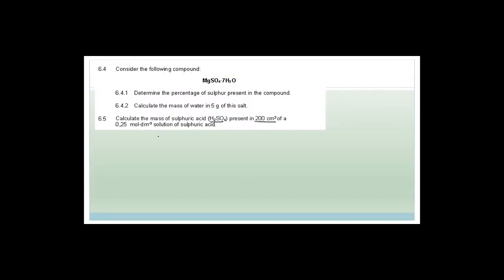New question: Calculate the mass of sulfuric acid present in 200 cubic centimetres of a 0.25 mol per decimetre cubed solution of sulfuric acid. We know concentration equals number of moles over volume. The concentration given is 0.25 mol·dm⁻³. We have centimetres cubed, so we must convert to decimetres cubed by dividing by 1000. So 200 divided by 1000 equals 0.2 dm³.